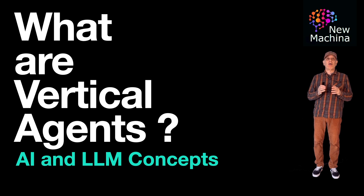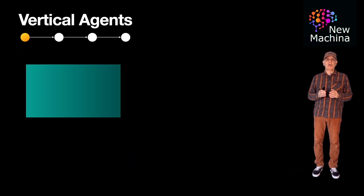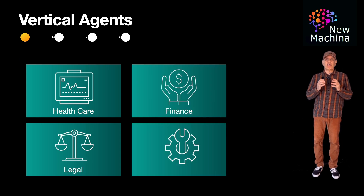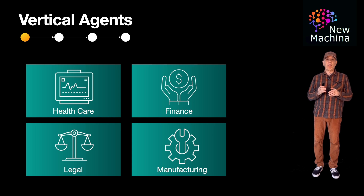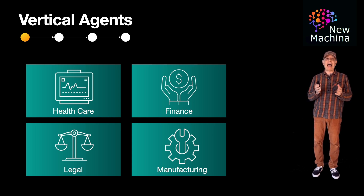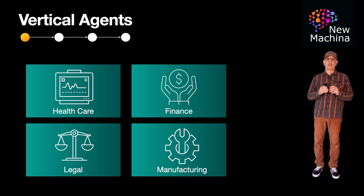So what are vertical agents? They are agents or agentic systems that are specialized for a specific domain or industry. Unlike general purpose agents, which aim to handle a broad range of tasks, vertical agents focus deeply on one vertical, such as healthcare, legal, finance, or manufacturing.